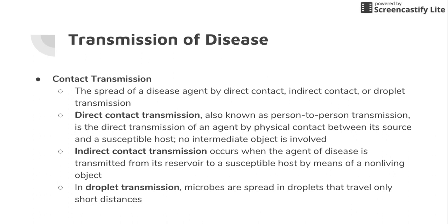Now, how do we actually transmit these diseases? We have contact transmission, which can be direct, indirect, or droplet. Direct contact means the microorganism touches you person-to-person — for example, I touch your hand, you get microorganisms on you, touch your face, and the organisms enter you. Direct contact includes touching, kissing, and sexual intercourse.